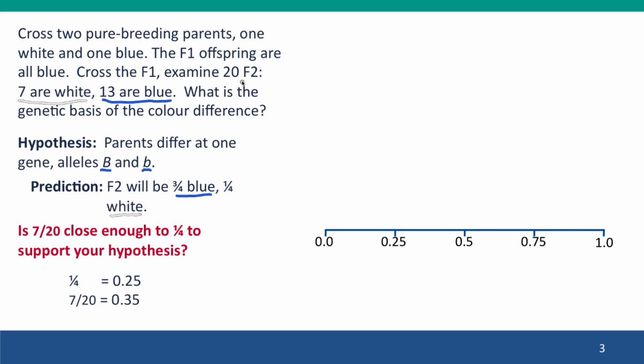In our experimental results, though, that's not quite what we saw. That would be, for 20, 15 blue and 5 white. But what we actually saw was 13 blue and 7 white. Instead of 0.25, we have a white frequency of 0.35.